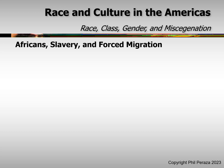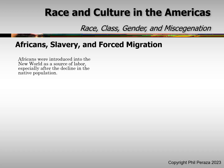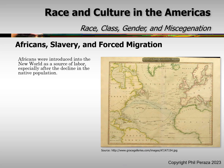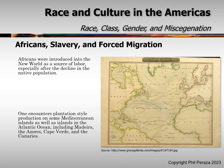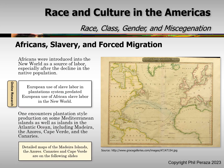Africans were introduced into the New World as a source of labor, especially after the decline in the Native population. One encounters a plantation-style production on some Mediterranean islands, as well as islands in the Atlantic Ocean, including Madeira, the Azores, Cape Verde, and the Canaries. European use of slave labor and the plantation system predated European use of African slave labor in the New World.